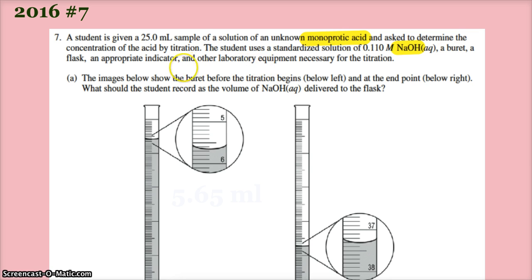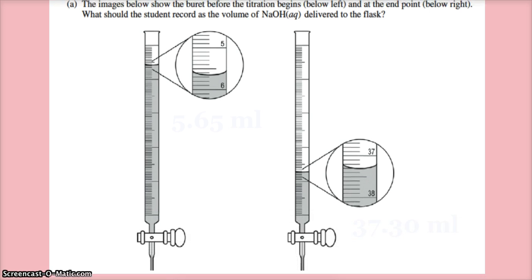Of course we have a buret, a flask, an indicator, and other laboratory equipment necessary for the titration. The images below show the buret before the titration begins on our left and at the endpoint on our right. What should the student record as the volume of sodium hydroxide delivered to the flask?